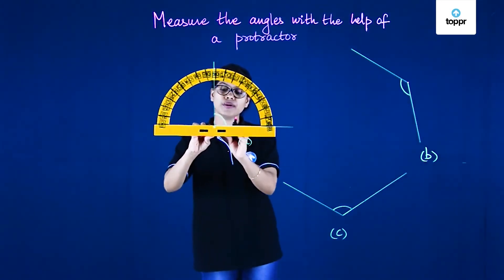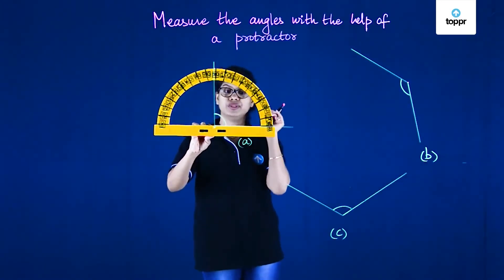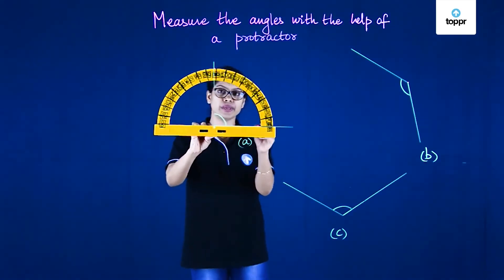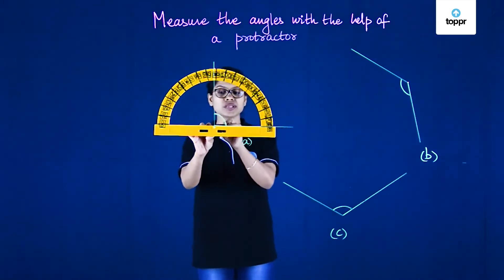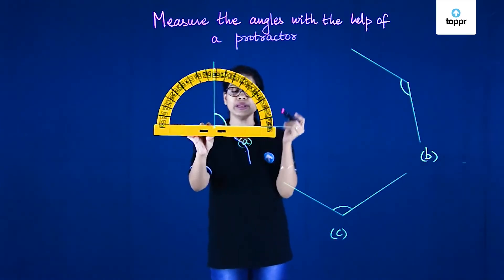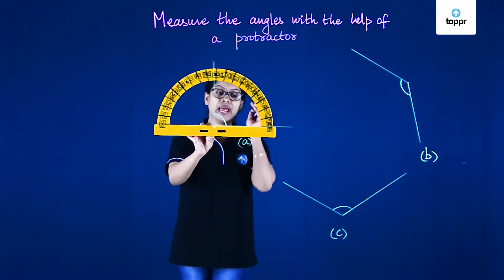Making the middle point coincide with the vertex and then adjusting the base so that the line coincides with the base. Now that we have done both things, the coinciding of the point and of the line.